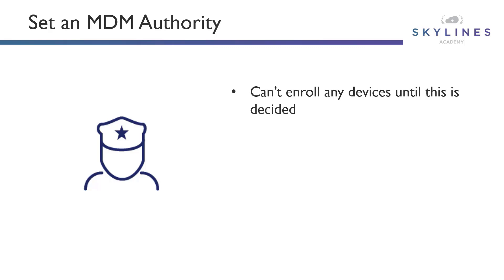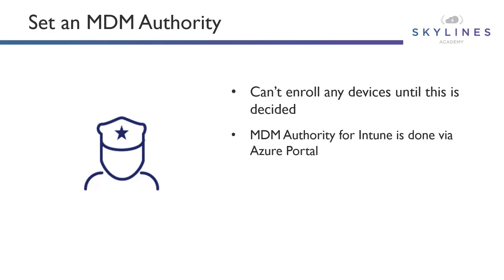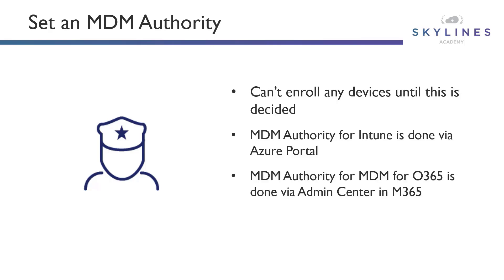You must set an MDM authority, because if you do not, you will not be able to enroll any devices. If you want to set the MDM authority for Intune, you do this through the Azure portal. The authority determines which tool you're going to be managing those devices from, and the decision depends on your subscription products and licensing. The two main options are Intune and MDM for Office 365. Note that the third option, Intune Hybrid, is no longer supported and has reached end of life.